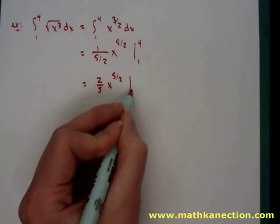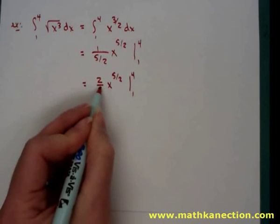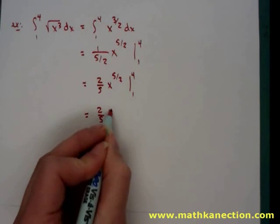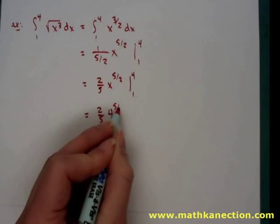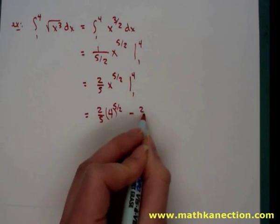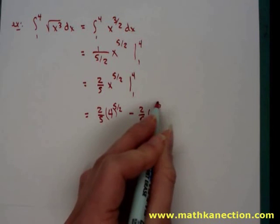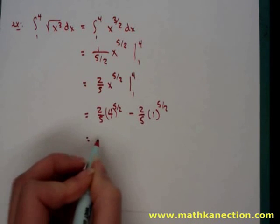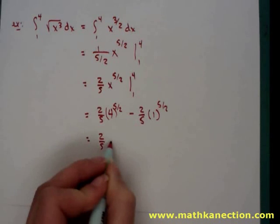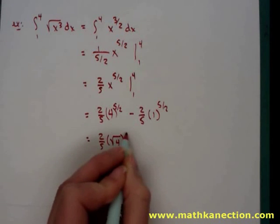Our coefficient rewrites to read two-fifths x to the five-halves, evaluated from 1 to 4. Following the first fundamental theorem of calculus, we substitute in 4 and subtract substituting in 1. We then simplify to get the solution.